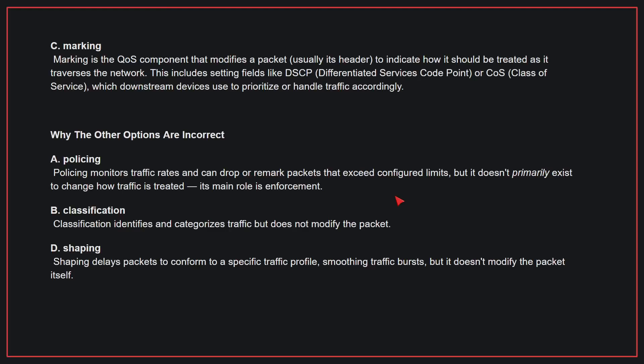Why the other options are incorrect? A: Policing monitors traffic rates and can drop or remark packets that exceed configured limits, but it doesn't primarily exist to change how traffic is treated — its main role is enforcement. B: Classification identifies and categorizes traffic but does not modify the packet. D: Shaping delays packets to conform to a specific traffic profile, smoothing traffic bursts, but it doesn't modify the packet itself. Therefore, the correct answer is C.